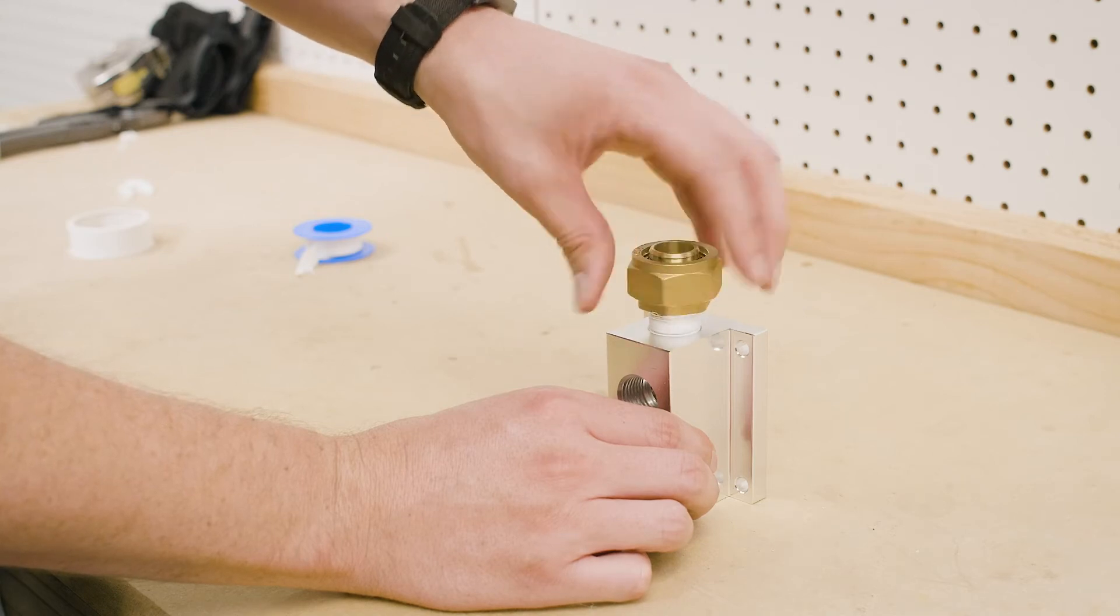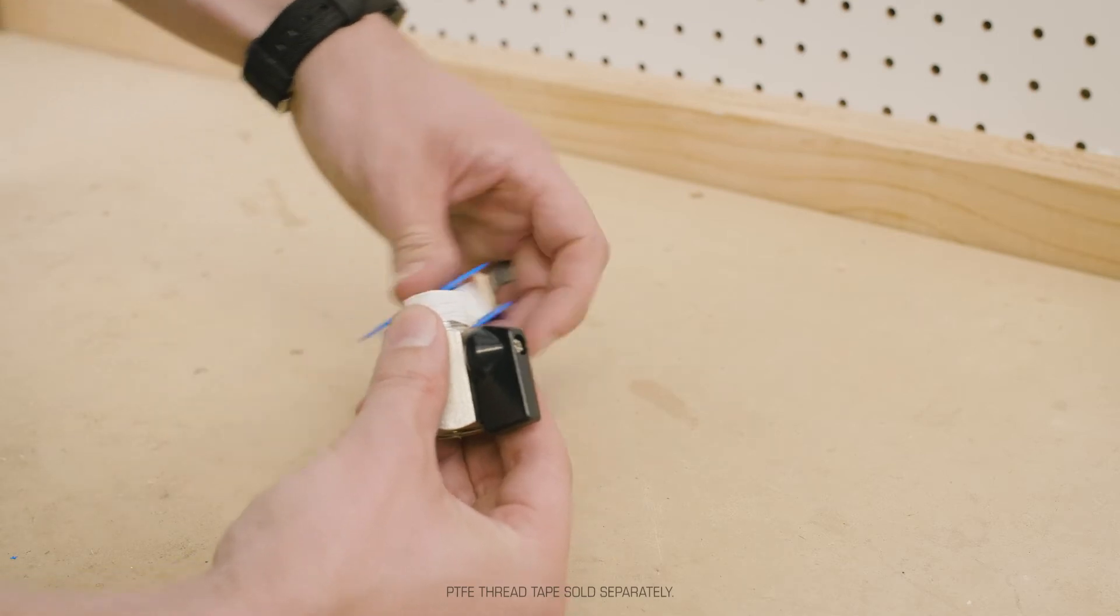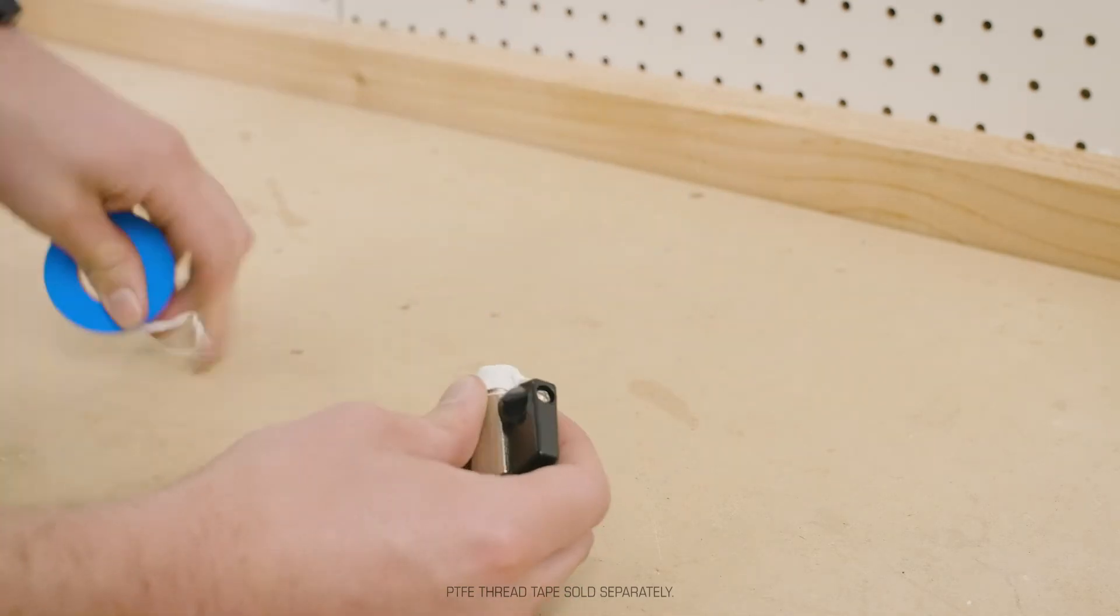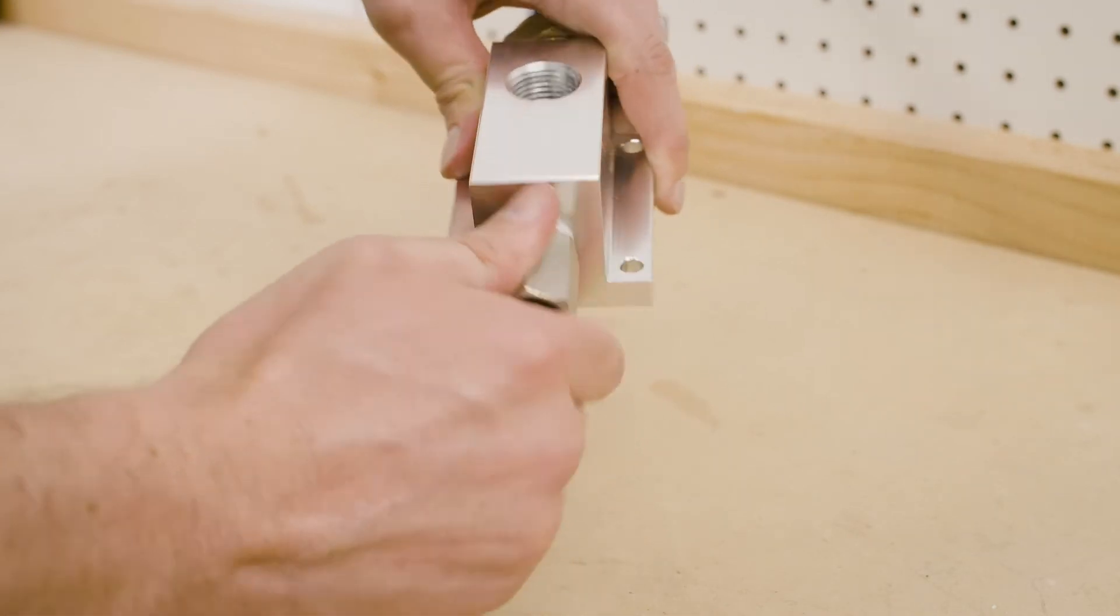Prepare the outlet you plan to use as an air source. Note, be sure to use thread sealant tape on all NPT threads where they connect to the outlet manifold. Install a drain valve on the opposite side of the manifold and tighten securely.